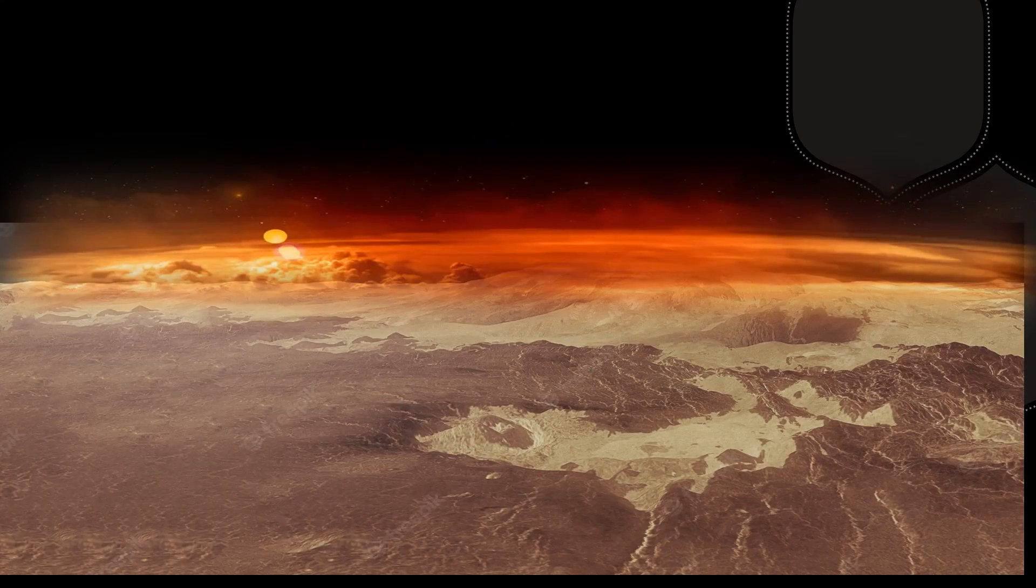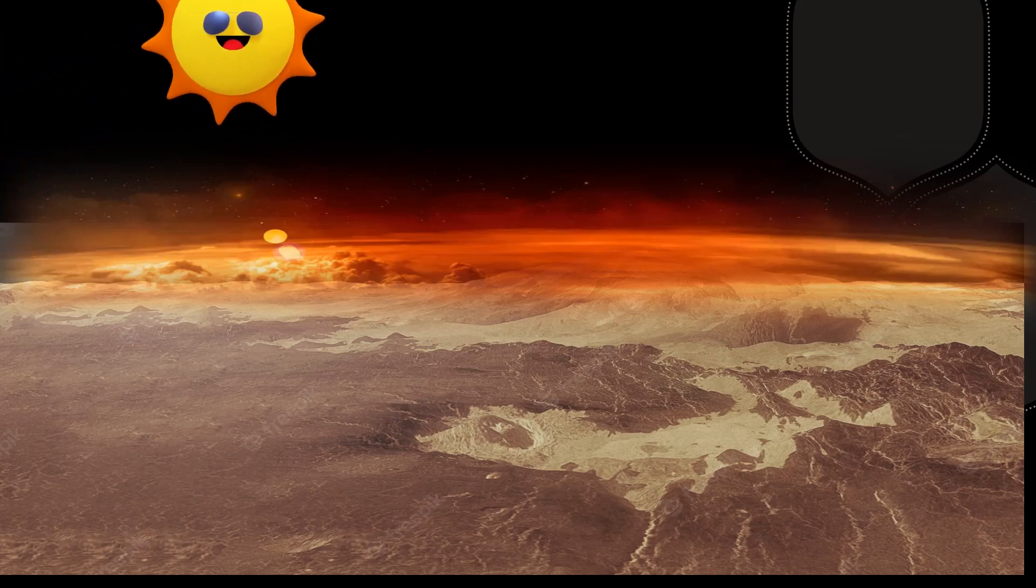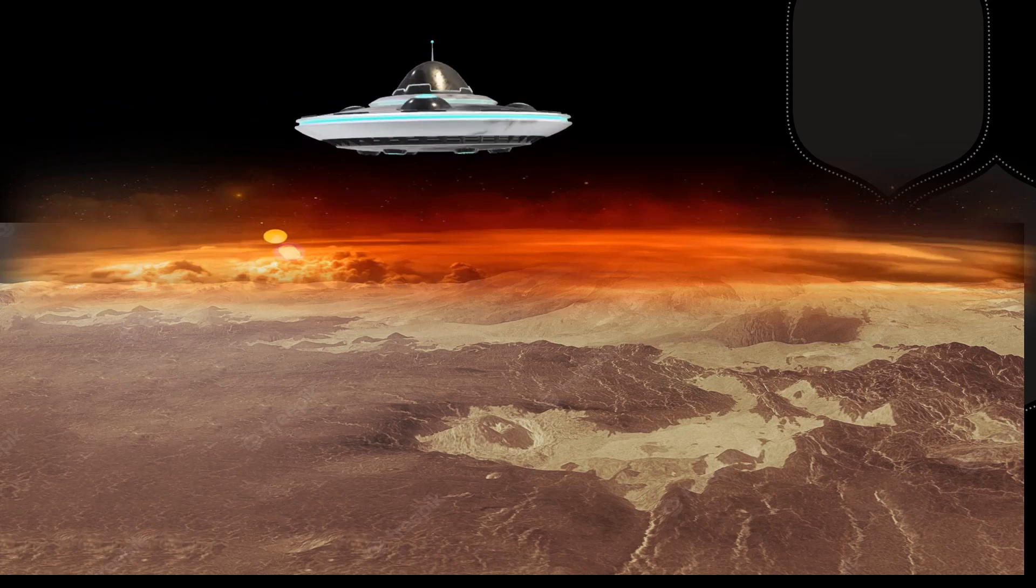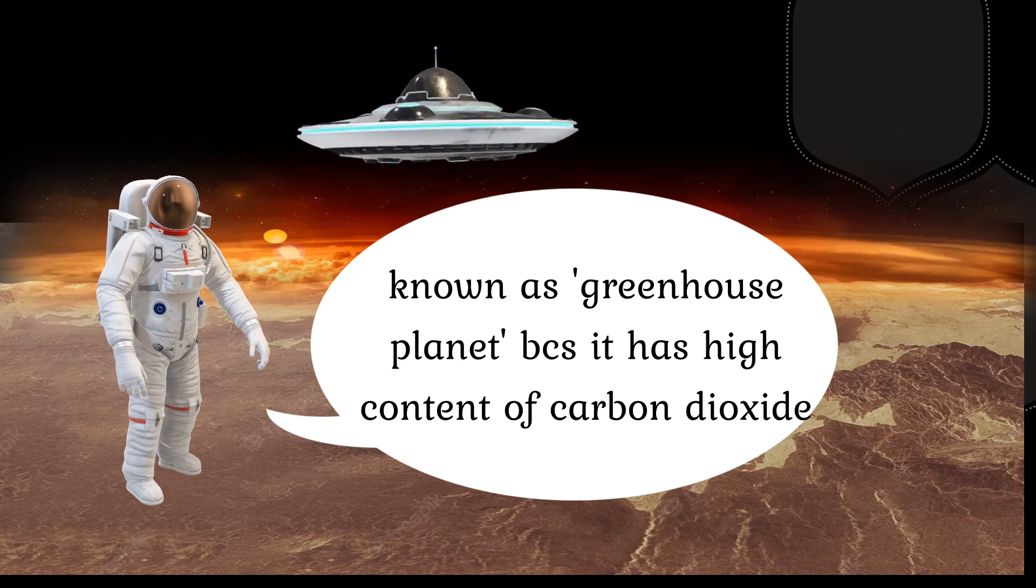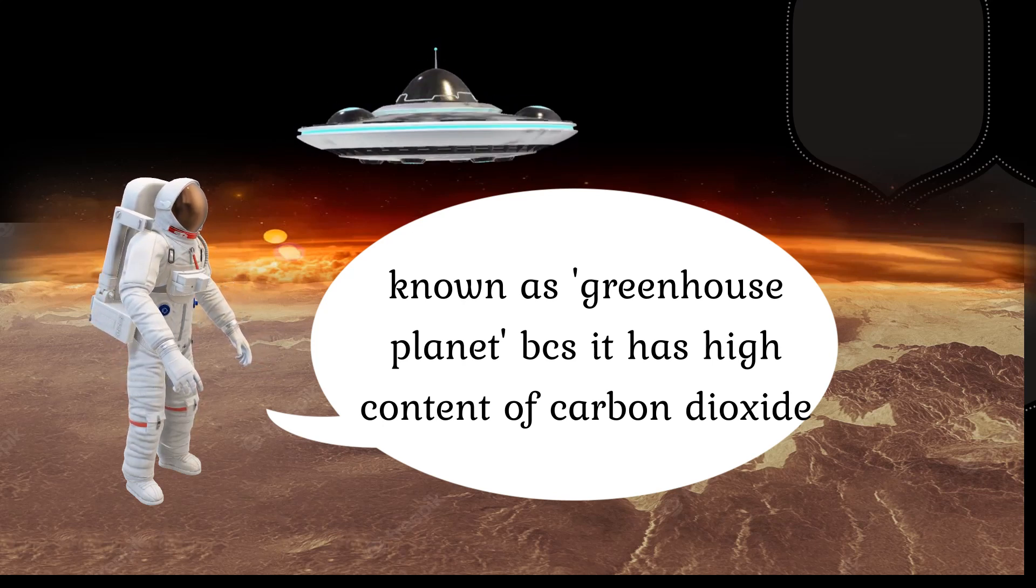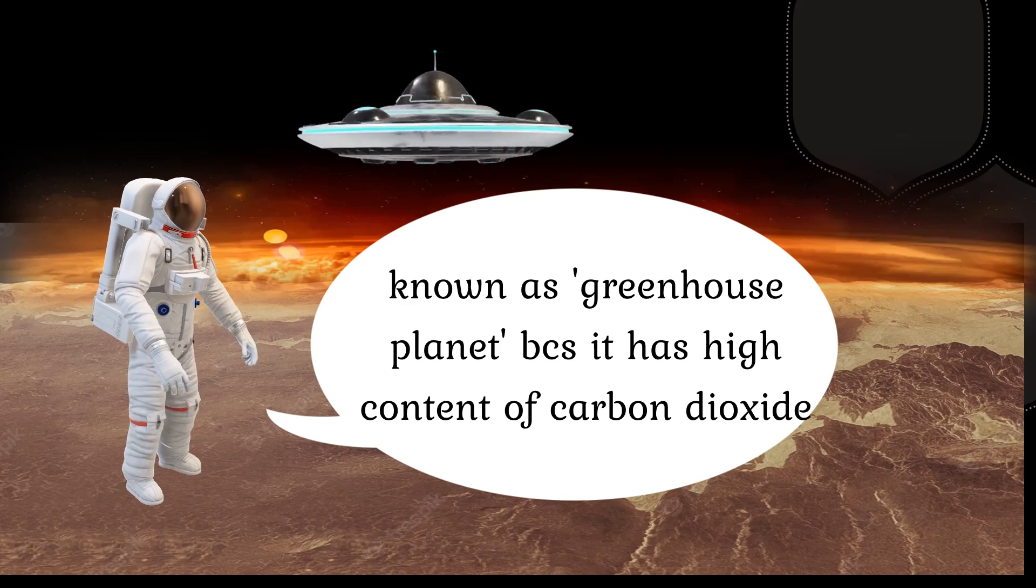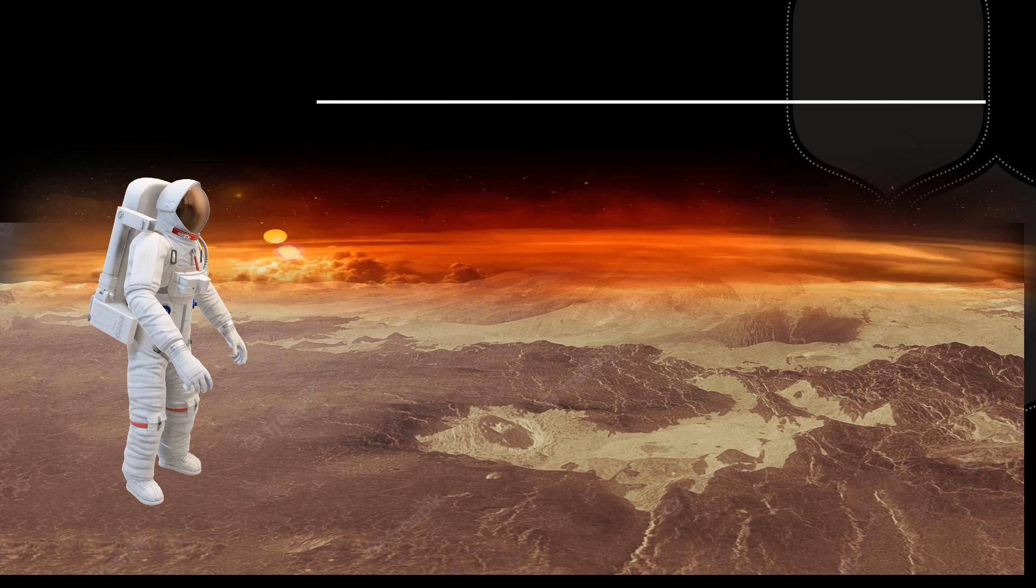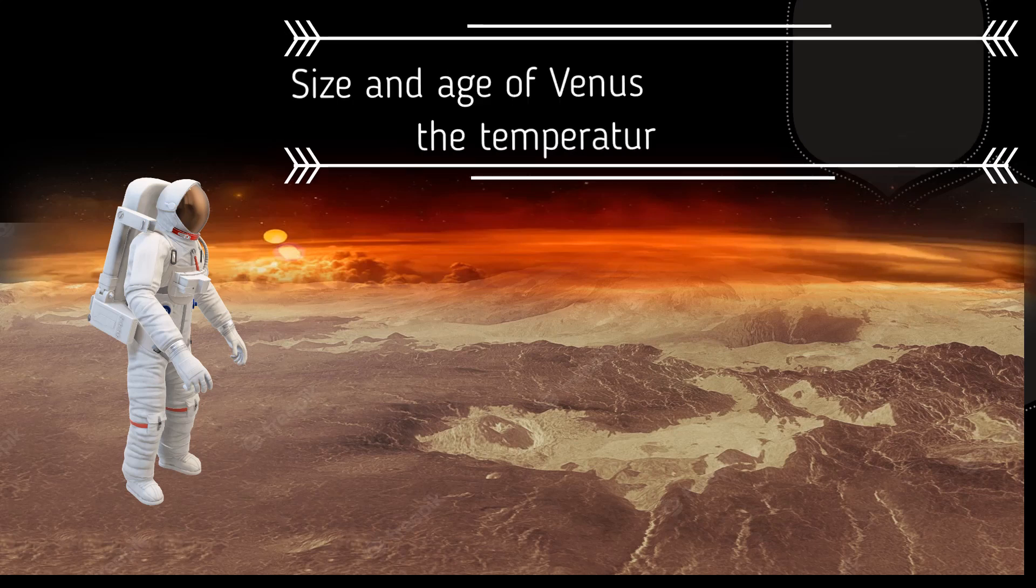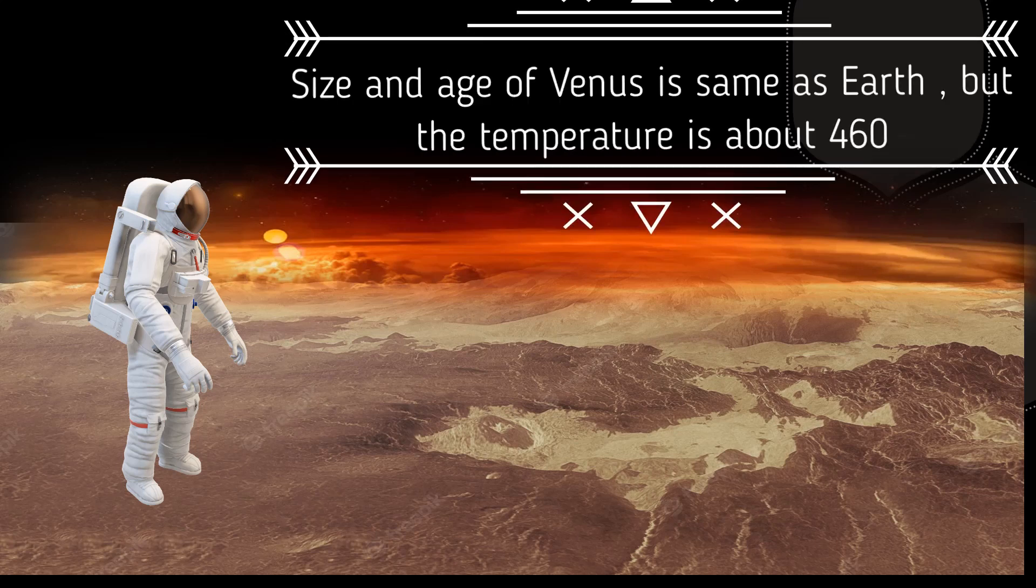This means the Sun rises from the west on Venus. Venus is known as the greenhouse planet because it has high content of carbon dioxide in its atmosphere. The size and age of Venus is the same as Earth, but its climate is far more challenging. It has a temperature of about 460 degrees Celsius.